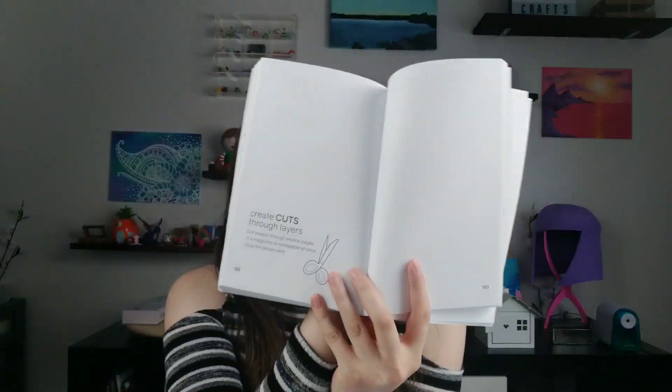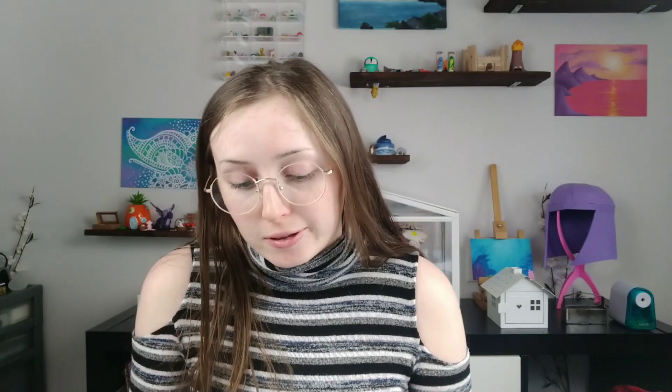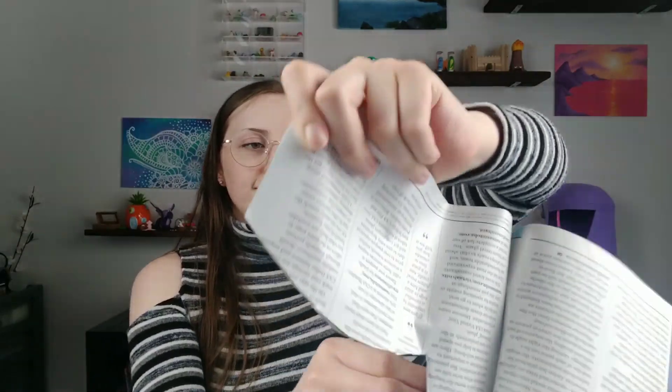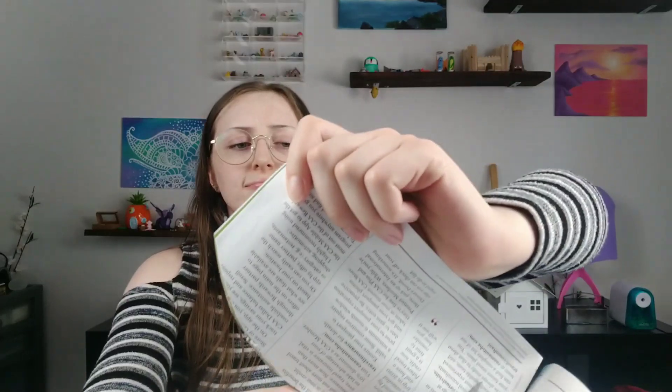Now that that one's done, I already picked out the next one. We're going to be doing page 182, create cuts through layers. Looks like I'll need a magazine for this one. Okay, I found one. It's my CAA magazine. We have to cut through several layers of the pages and glue what we find on the paper. I'm not sure how much I should cut or what kind of pattern, but I guess I'll just start and see what kind of shapes and colors I end up with.